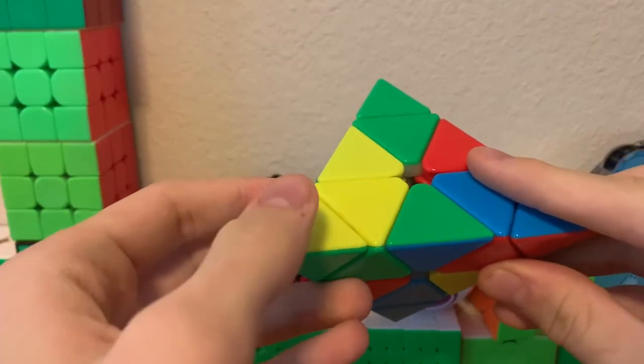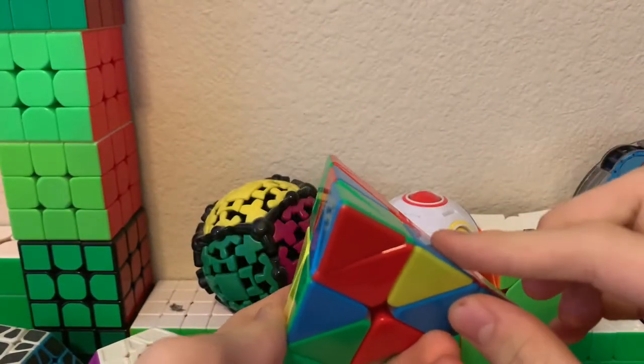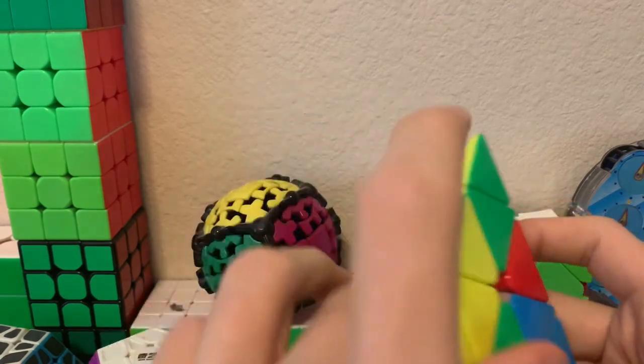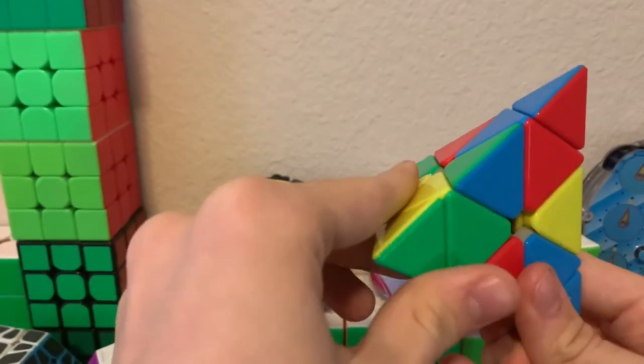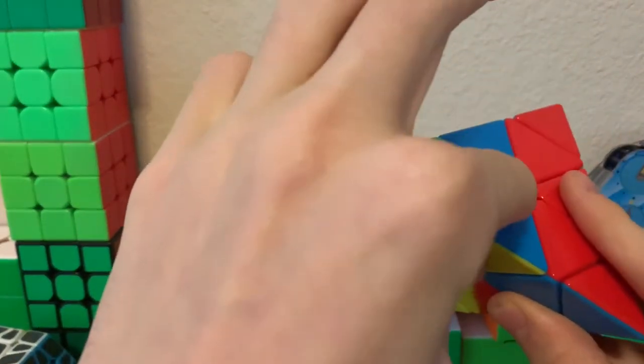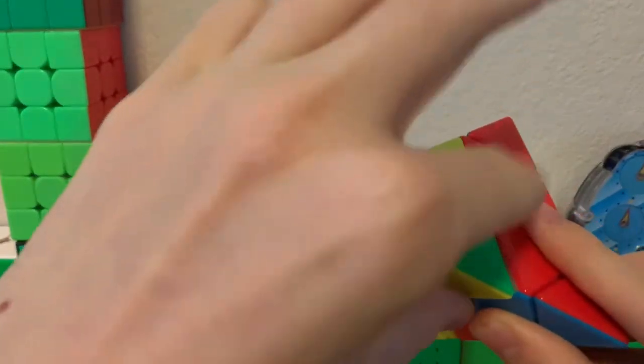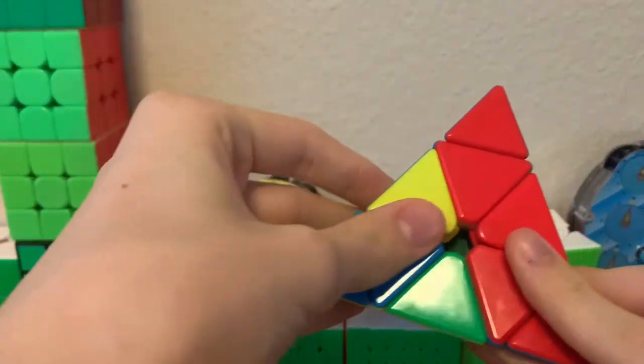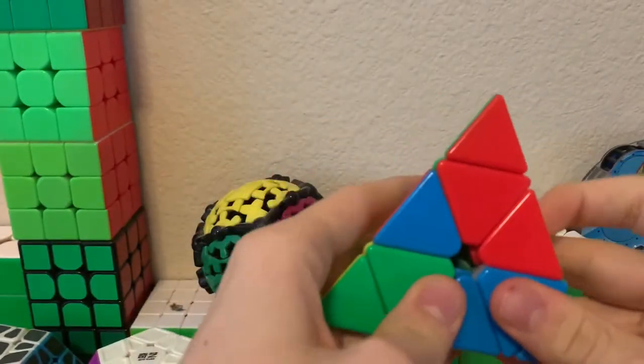Now you need to orient the edges. In a case like this where we have this unoriented and this unoriented, we can fix that by doing a down move to orient this, putting this in the position that this edge was, and then undoing the first move. This also works with U moves.